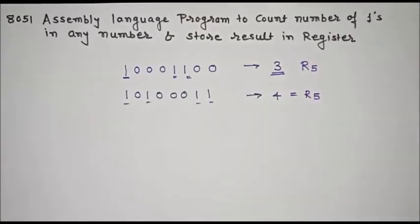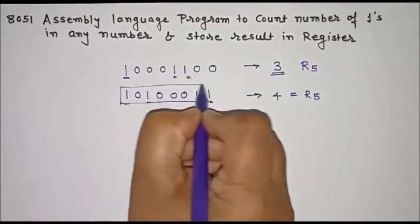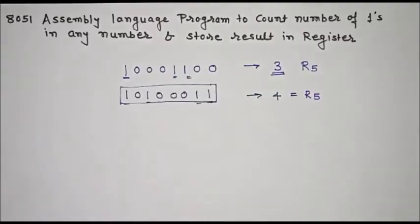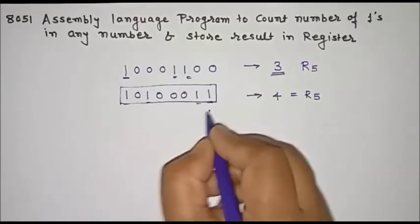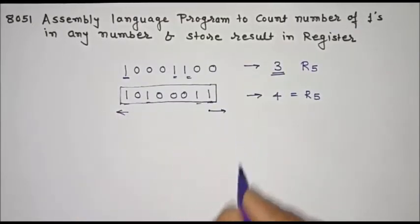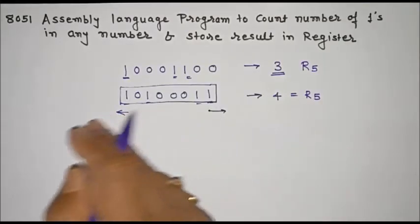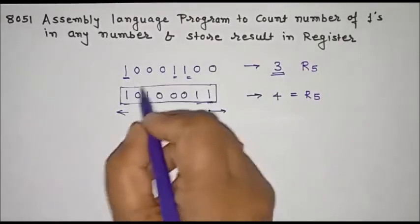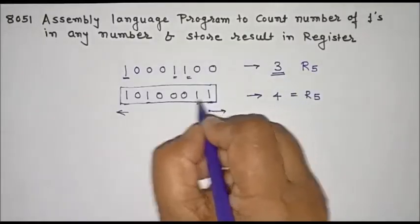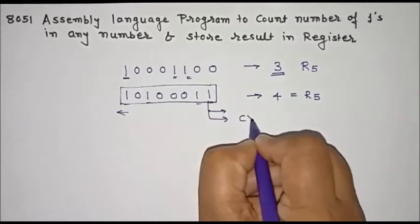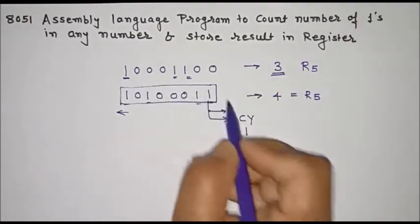For writing this program we'll use a logic. We'll store this number in the accumulator, and one at a time we'll rotate this number in the left or right direction with carry. We'll use the instruction rotate right with carry or rotate left with carry. When you rotate one time in the right direction with carry, in this example this one will be stored in the carry flag.